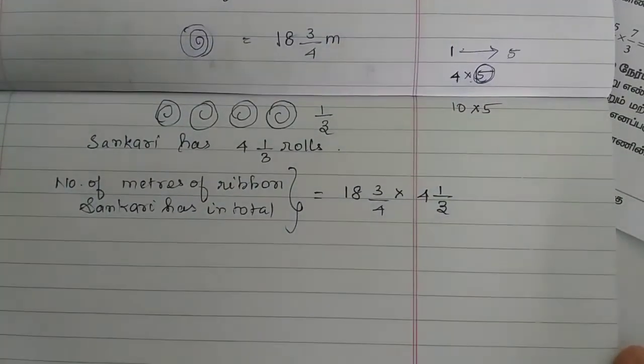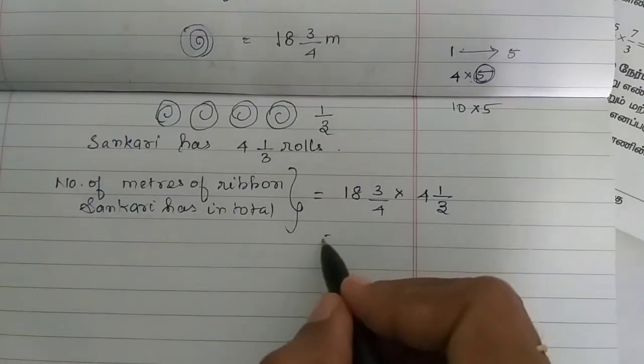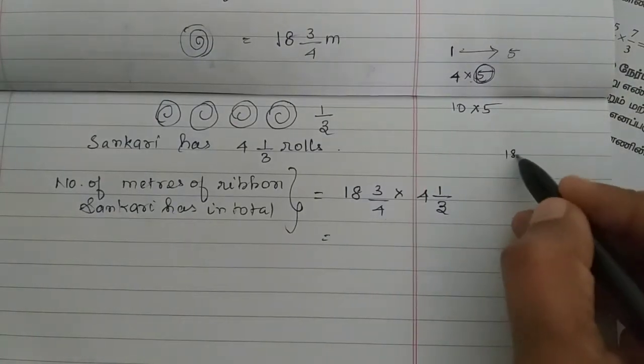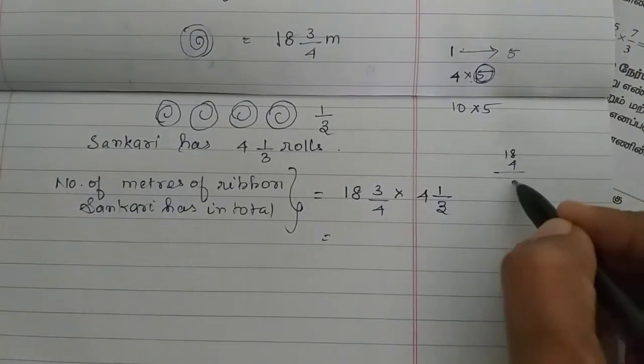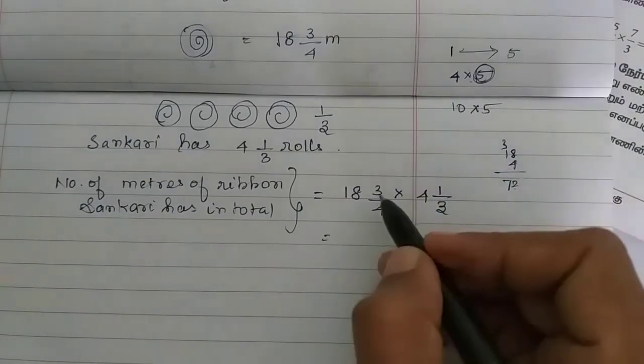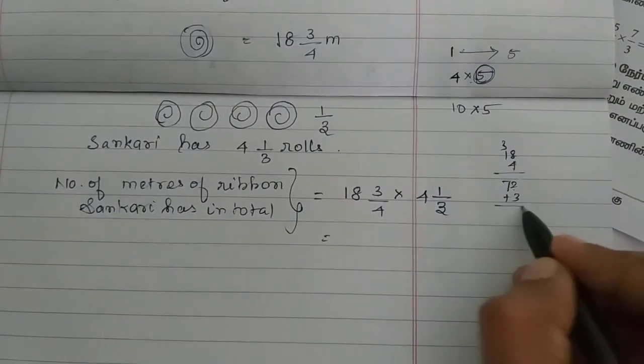So, this is the mixed number. This is improper change. 18 into 4. So, 8 4 is 32 balance 3. 4 once 4 plus 3 is 7. 72 plus 3. Write down. Then, 75 is 75.